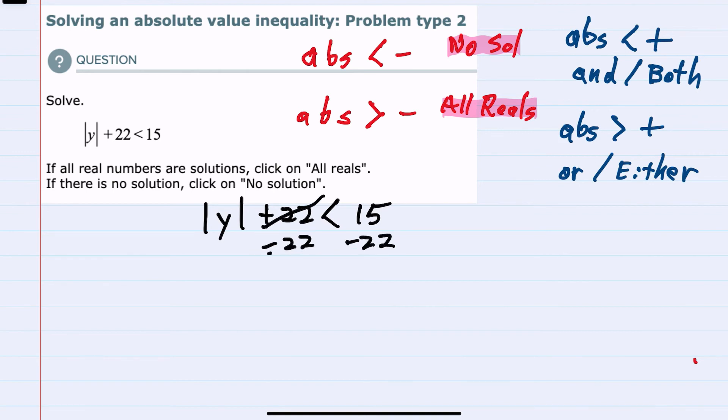That would cancel on the left-hand side, leaving just the absolute value of y is less than negative 7. Looking back at the top here, we see that we have the absolute value less than a negative, and that would be no solution.